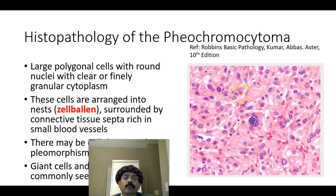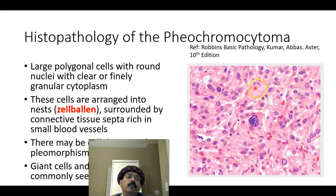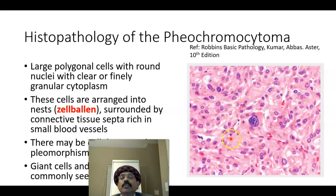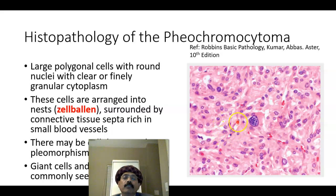On histopathology we find large polygonal cells with round nuclei, and there may be spindle-shaped cells with clear or finely granular cytoplasm. We cannot see the cytoplasmic granules with hematoxylin and eosin stain, but by electron microscopy we can see the catecholamine-containing granules inside the cells. The cells are arranged into nests called zellballen, surrounded by connective tissue.